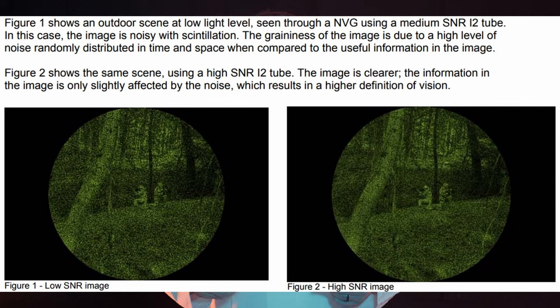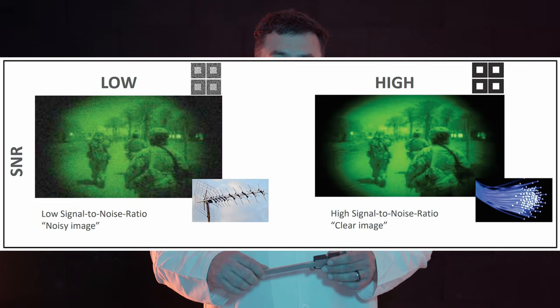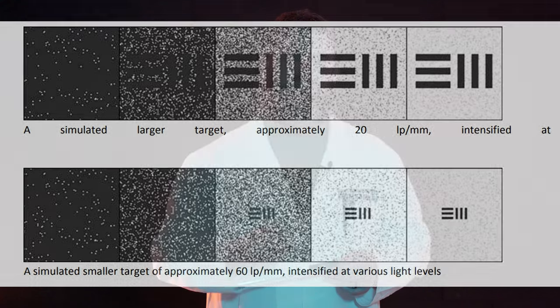The next metric we're going to be discussing is arguably one of the most important for most people. That is going to be signal to noise, or SNR. SNR is the measure of the light signal reaching the eye divided by the perceived noise as seen by the eye. SNR determines the low light resolution of an image tube. Therefore, the higher the SNR, the better the ability of the tube to resolve objects with good contrast under low light conditions. Because SNR is directly related to the photocathode sensitivity and also accounts for phosphor efficiency and microchannel plate operating voltage, it is the best single indicator of an image intensifier's performance.